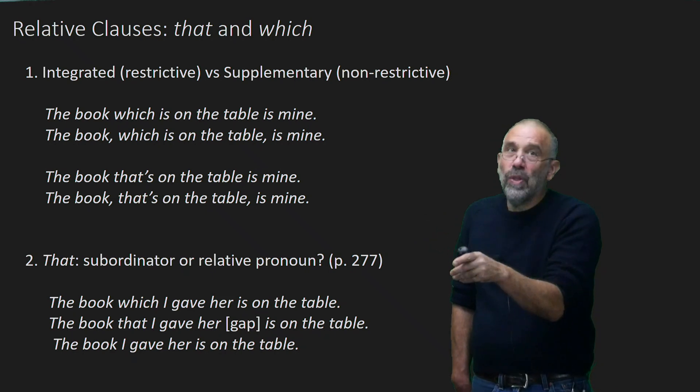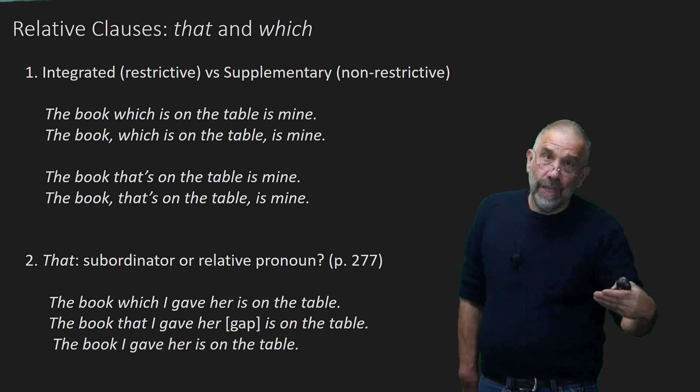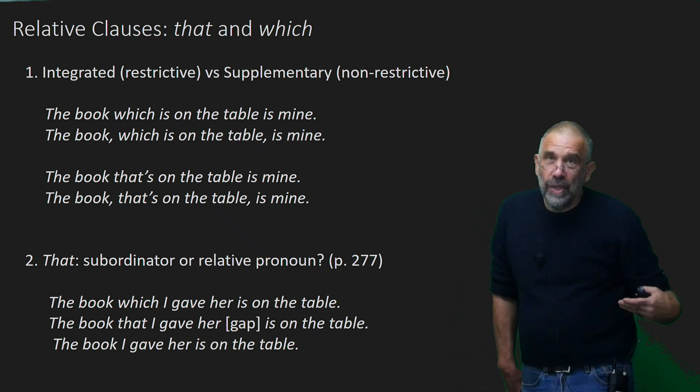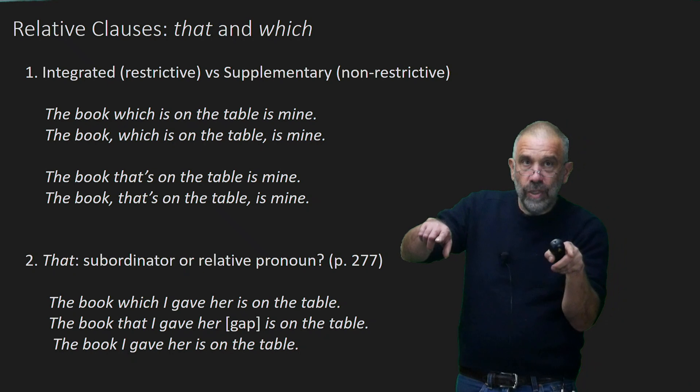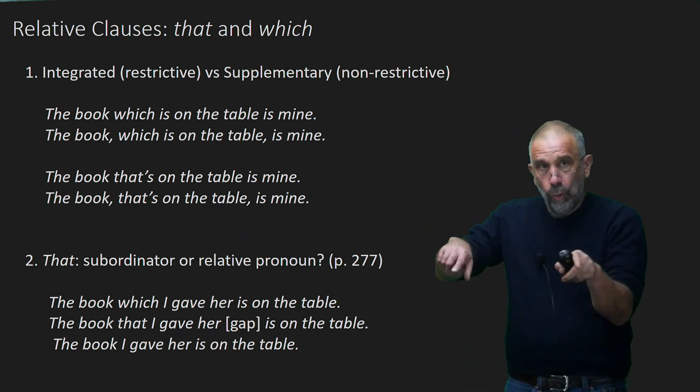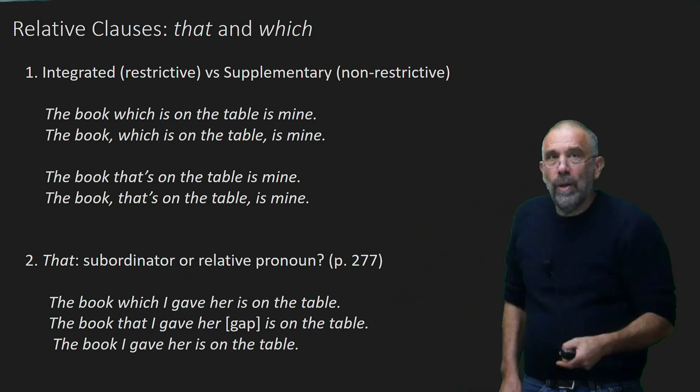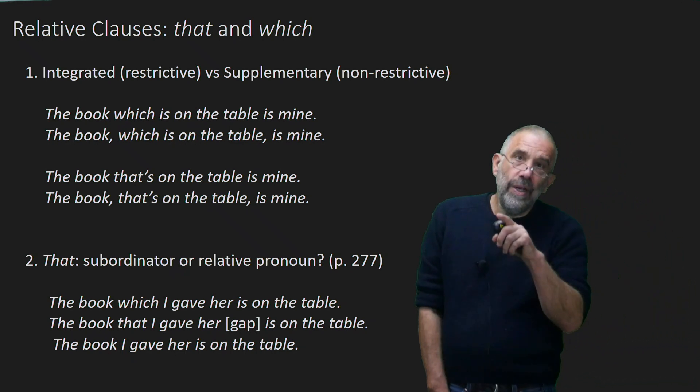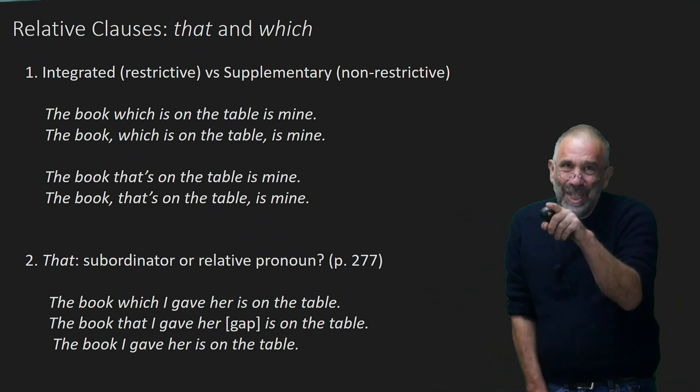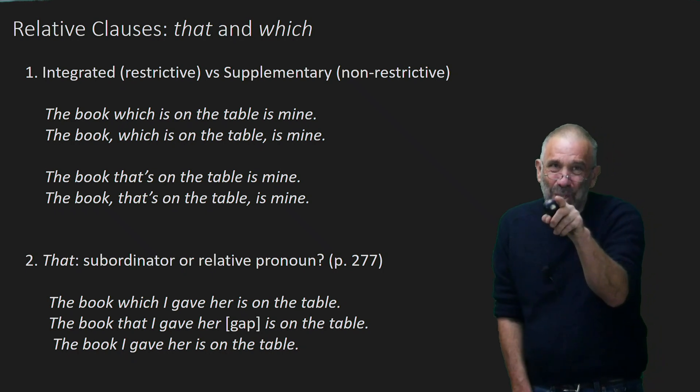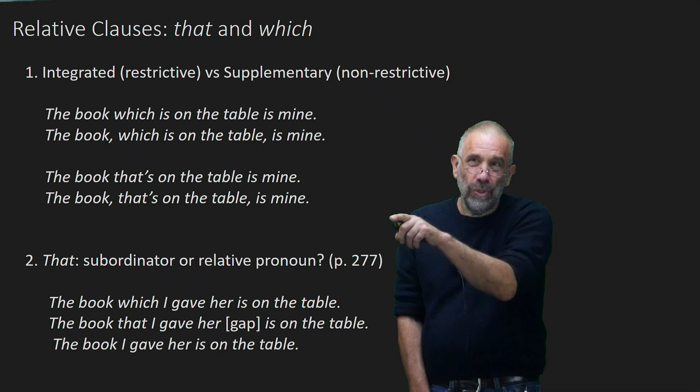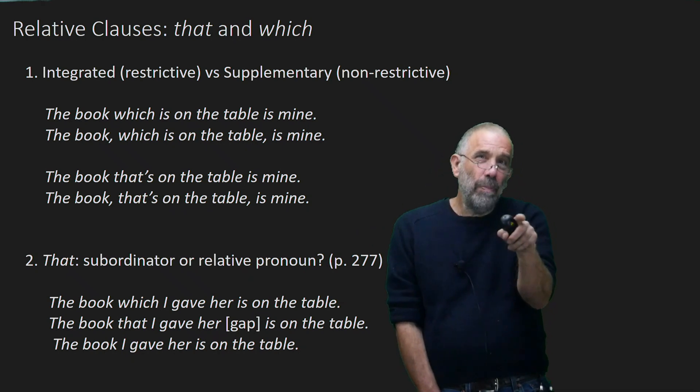The book, which is on the table, is mine. That would be the supplementary. That would be the non-restrictive. If we pause in our speech, which we show in our writing by putting commas in, distinguishes between two kinds of relationships between the subordinate clause and the noun, the thing it's referring back to.